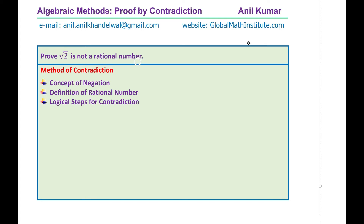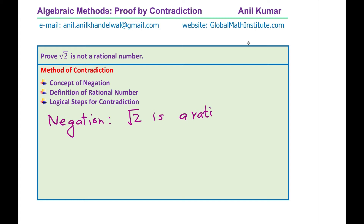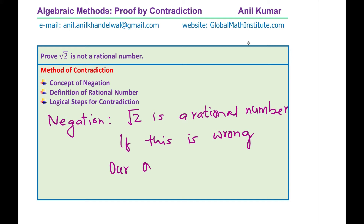The negation of this statement will be: we need to prove square root 2 is not a rational number, so the negation will be that it is a rational number. We call it a negation: square root 2 is a rational number. The whole idea is, if I prove that this negation is wrong, then our original statement is correct.